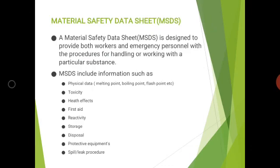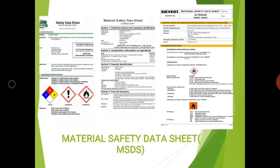MSDS also covers first aid, reactivity (how the material reacts to various physical changes), storage and disposal procedures, and protective equipment to be used. In case of a spill or leakage, it provides guidance on how to respond. Examples of MSDS sheets show multiple sections: section one covers chemical product and company identification, section two covers composition and information on ingredients, and so on.